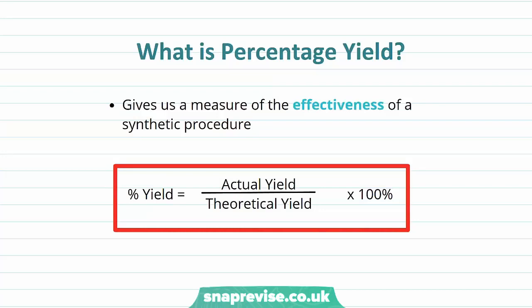So firstly, what is percentage yield? Well, percentage yield gives us a measure of the effectiveness of a synthetic procedure, and the equation we use to calculate it is the actual yield divided by the theoretical yield, multiplied by 100% to give us a percentage.